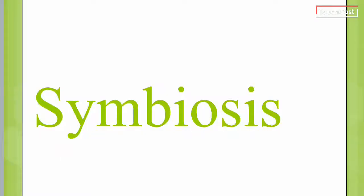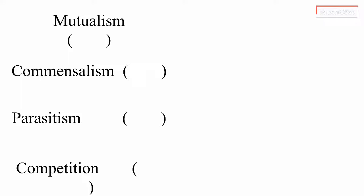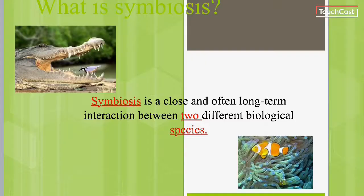Ladies and gentlemen, we are talking about symbiosis. You have a foldable that looks something like this — it is probably green. If you look along the fold of your foldable, on the edge where the fold is, that's the first blank that you have. Symbiosis is a close and often long-term interaction between two different biological species.